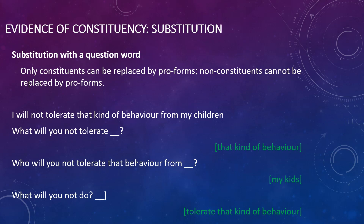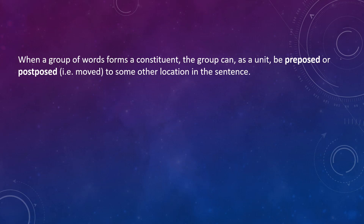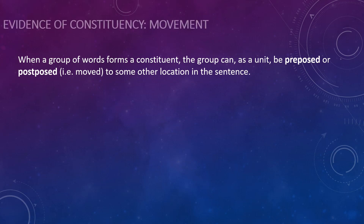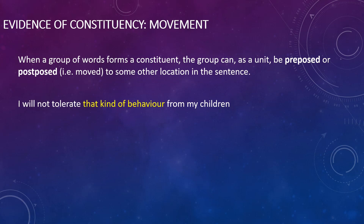That brings us to another kind of evidence for constituency — movement. In sentences in English, and in many other languages, words and phrases can move around a bit. And if they move together as a chunk, it shows that they are a constituent. So looking at 'I will not tolerate that kind of behavior from my children' — I've highlighted that part in yellow — we can take that yellow part and front it.